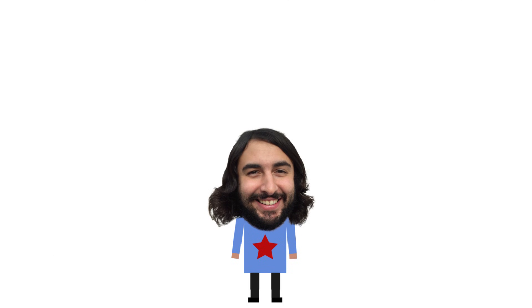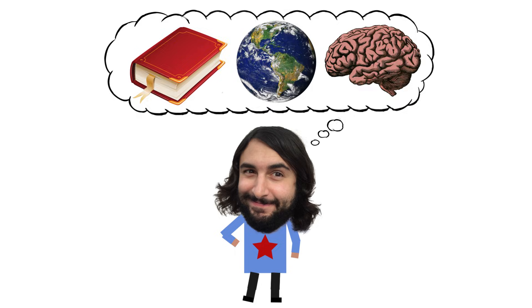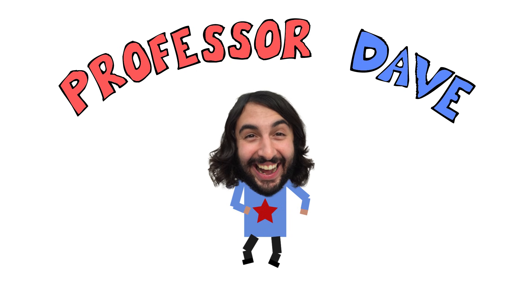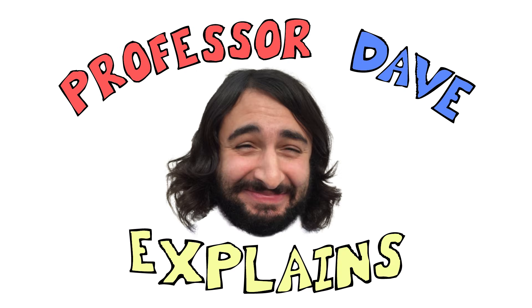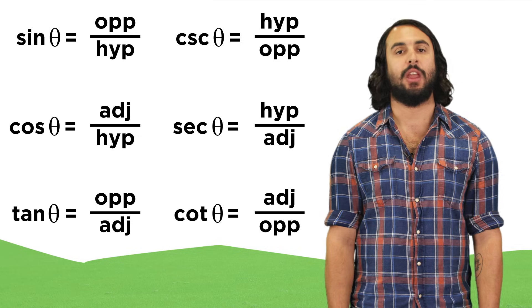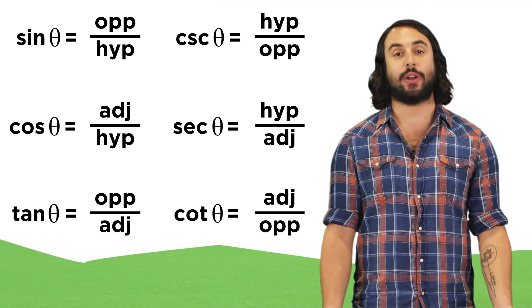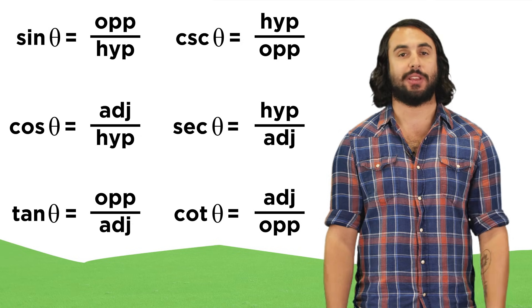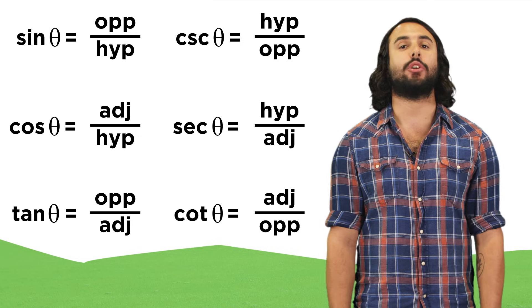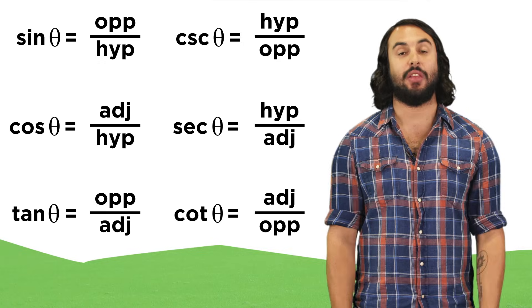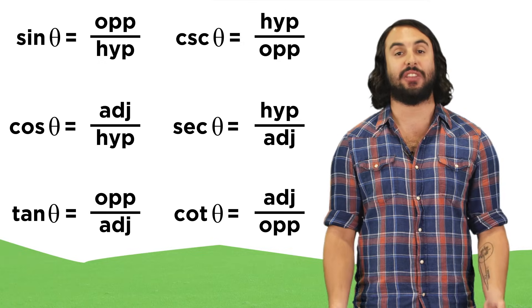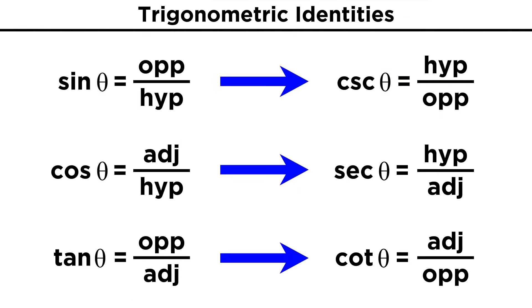Professor Dave again. Let's learn trig identities. We now know about the six trigonometric functions, so let's learn about some of the identities that apply to these functions. First, let's list the functions themselves.